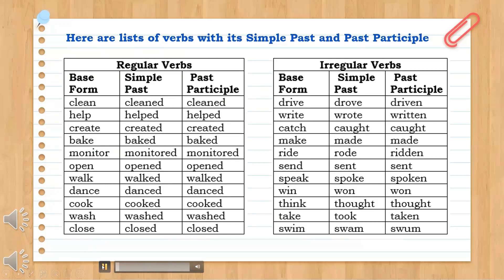For the irregular verbs, the past participle is not formed by adding 'd' or 'ed.' Examples: write → wrote → written; catch → caught → caught; ride → rode → ridden; send → sent → sent; speak → spoke → spoken. For your practice, here are the lists of verbs for the irregular part.